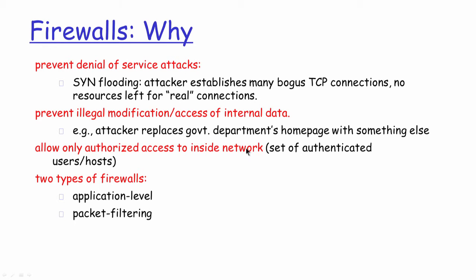Third, the firewall allows only authorized access to the inside network. The firewall device is expected to allow access only to authenticated sets of users or authenticated sets of devices to get inside the network, thereby preventing others from accessing any part of the network — whether in terms of servers or the data on those servers. There are typically two types of firewalls: an application level firewall and a packet filtering level firewall.